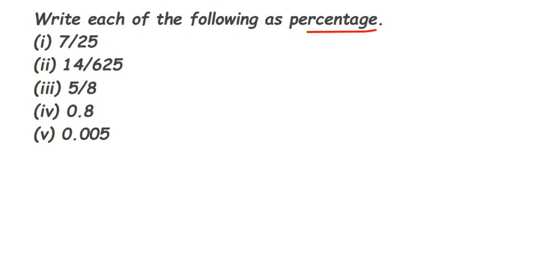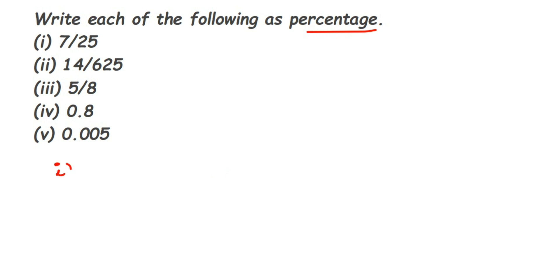There's a different question where the percentage is already given, like they've given 60% and then we have to convert into a fraction or ratio — that is different. Here we have to calculate the percentage; you can see the numbers don't have a percentage sign. So whenever you're finding out the percentage, just multiply with 100 and do the cancellation — you will get the answer. Let's start with the first question: 7 upon 25.